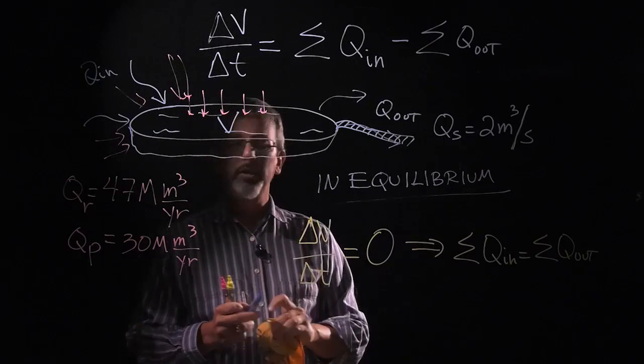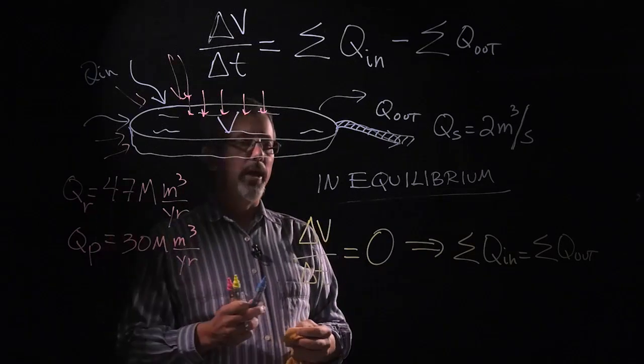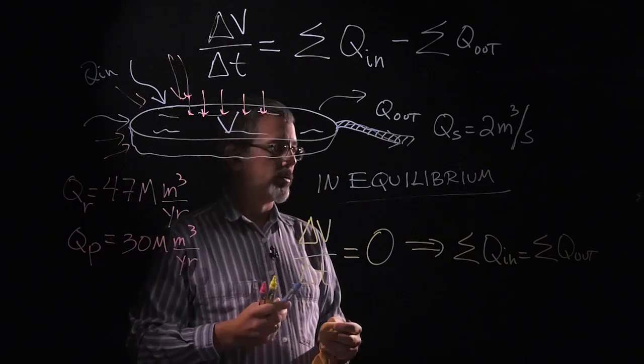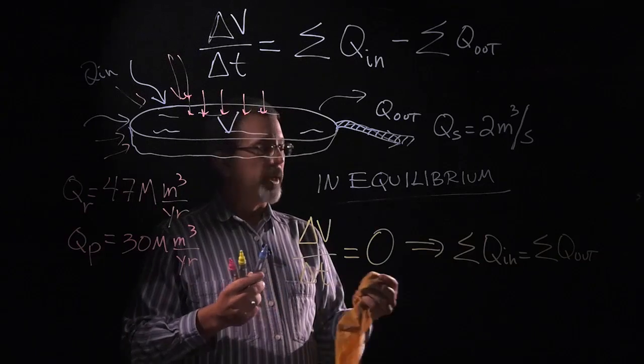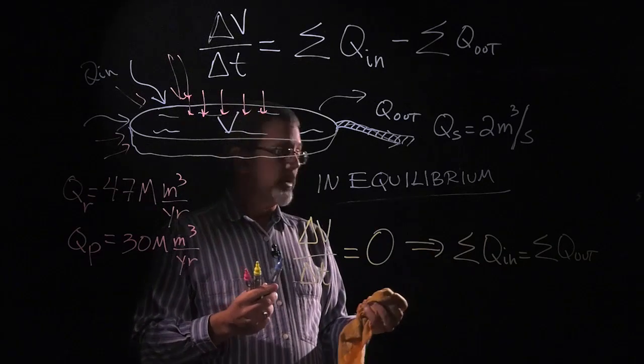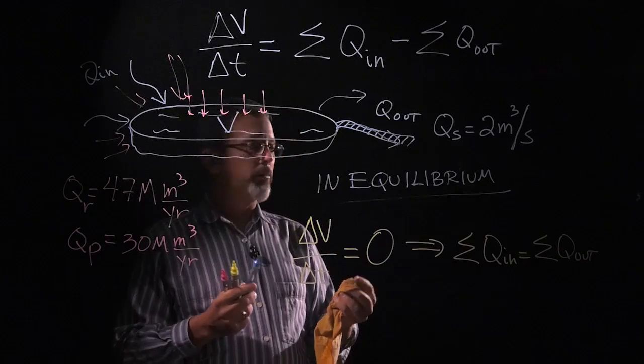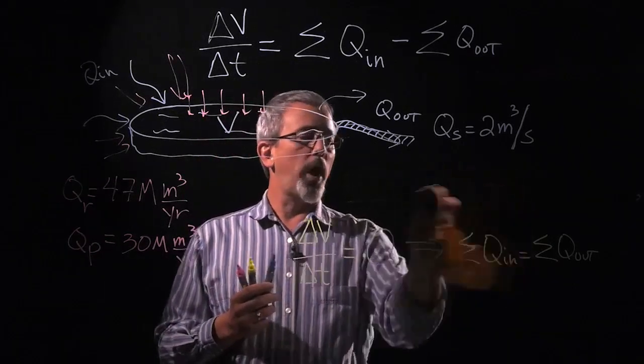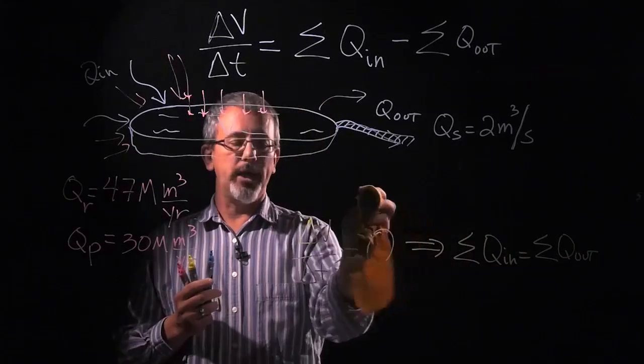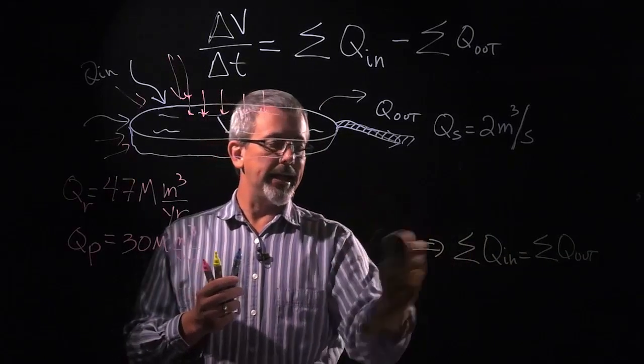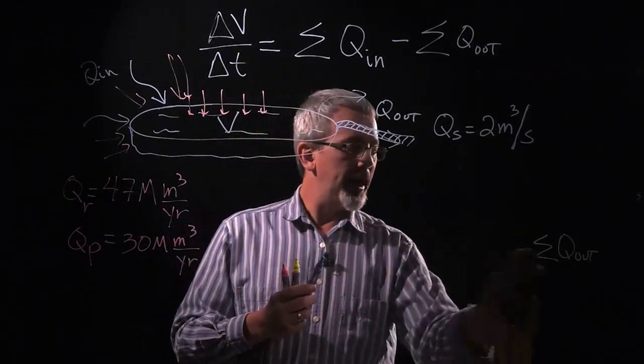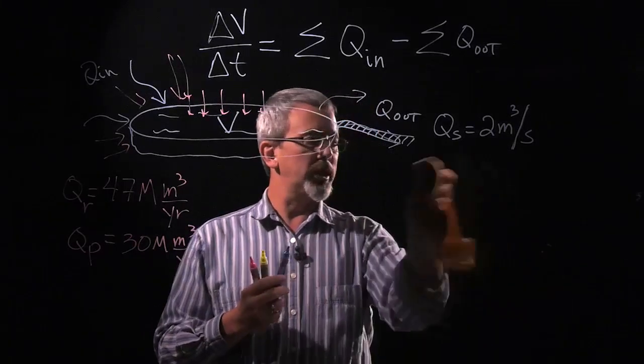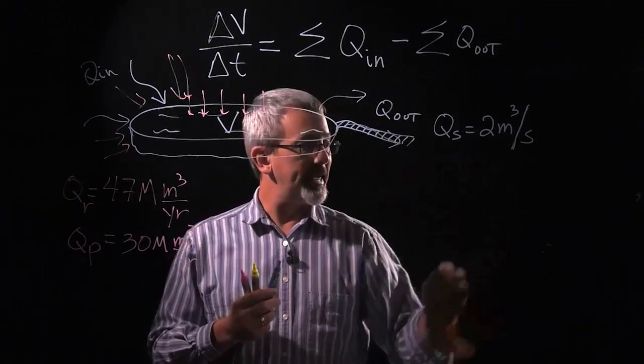Okay, so we have flows in and flows out. Okay, but let's talk about is this stream in equilibrium or what is the status of this stream? In this case, we're doing what's called a water budget. We're actually looking at the stream and seeing how much water is coming in and how much water is coming out. Very similar to the kind of thing you might do with your finances.